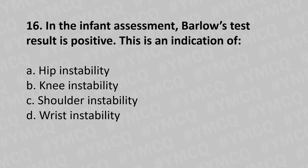Moving to our 16th question: in infant assessment, Barlow's test is positive — this is an indication of option A hip instability, option B knee instability, option C wrist instability. And the answer is option A hip instability.